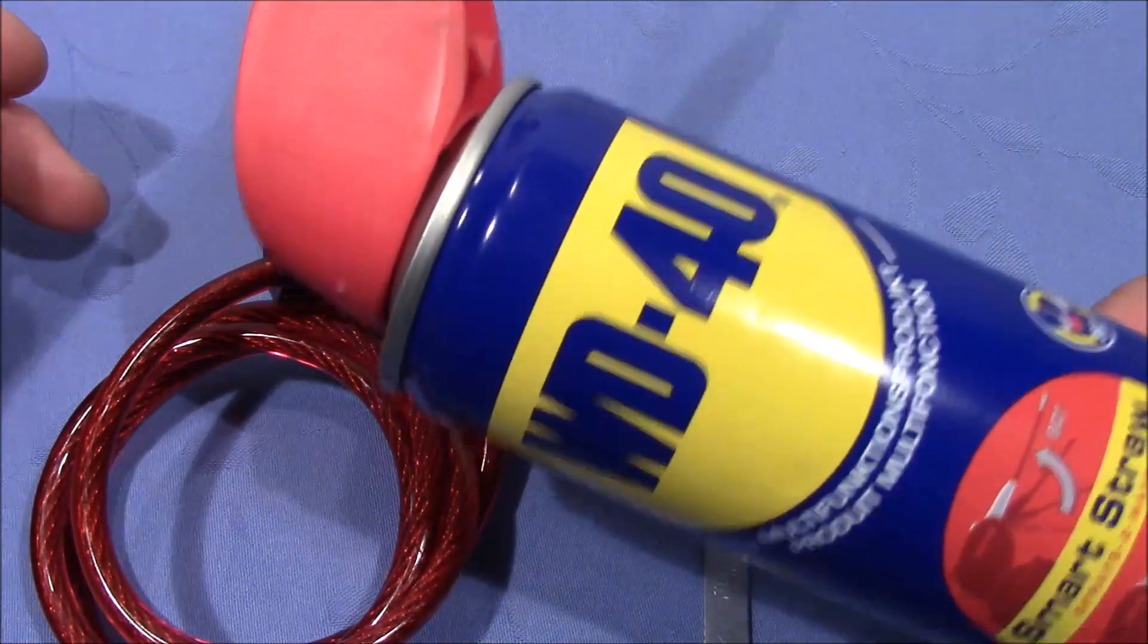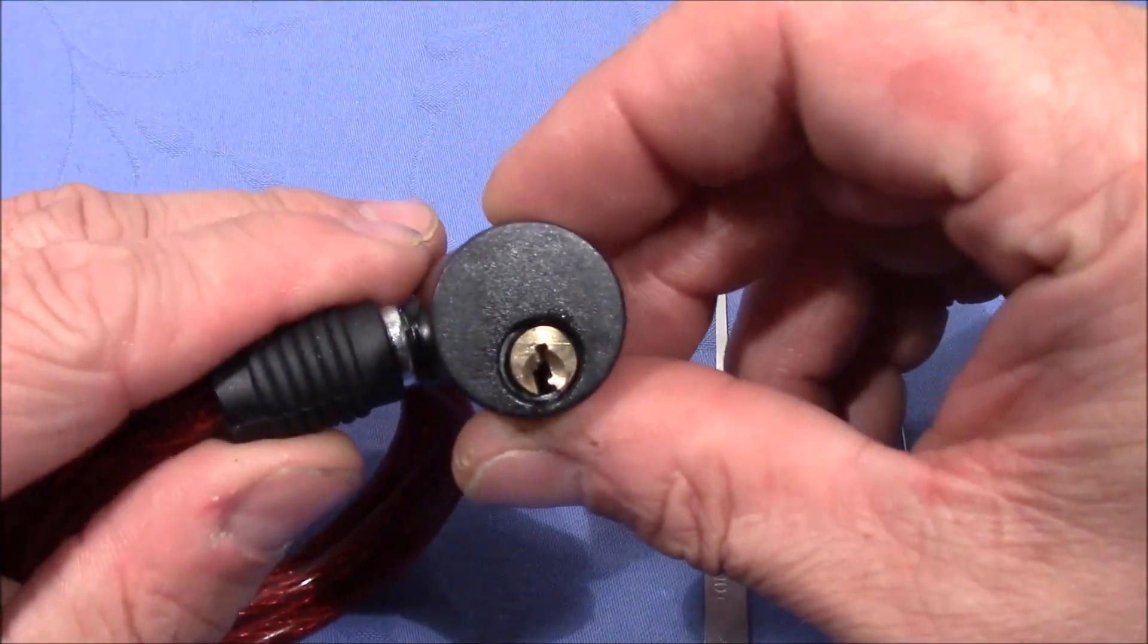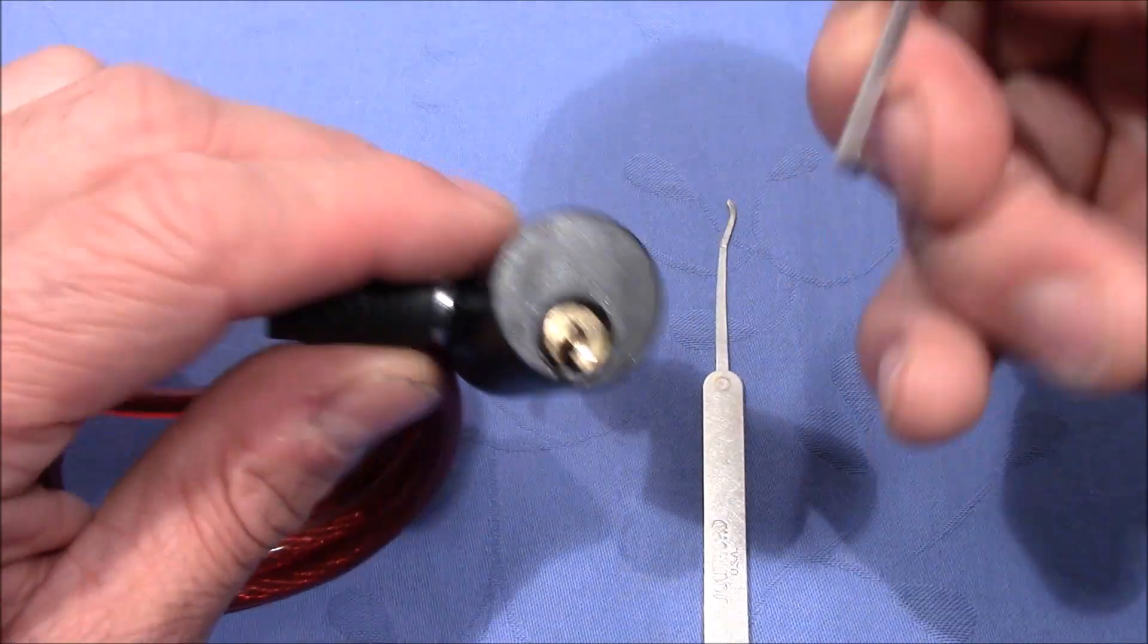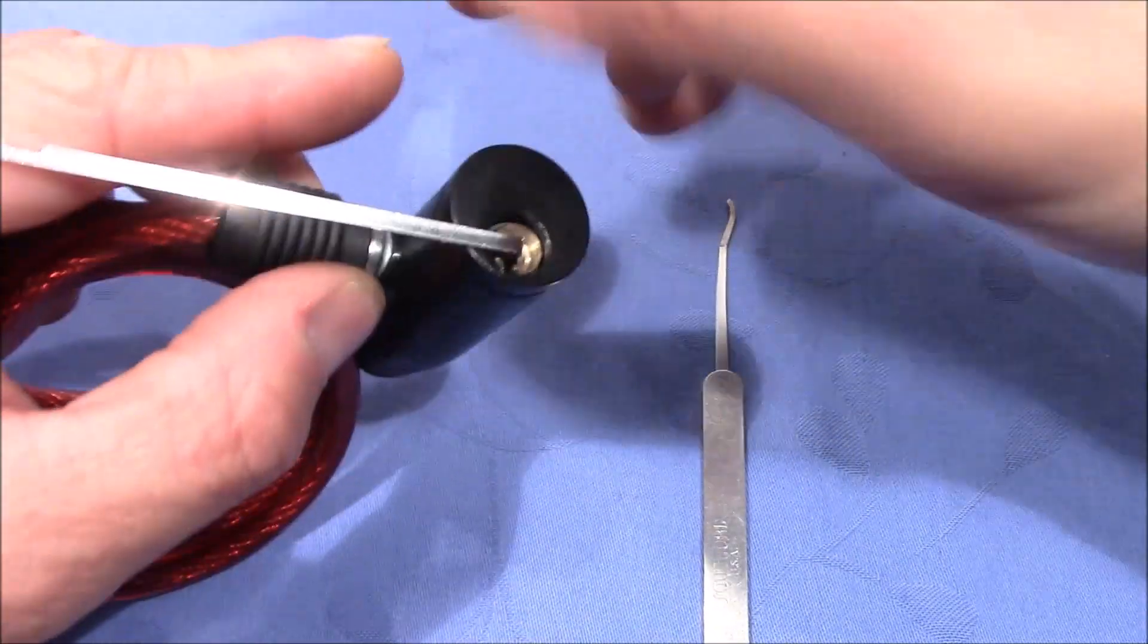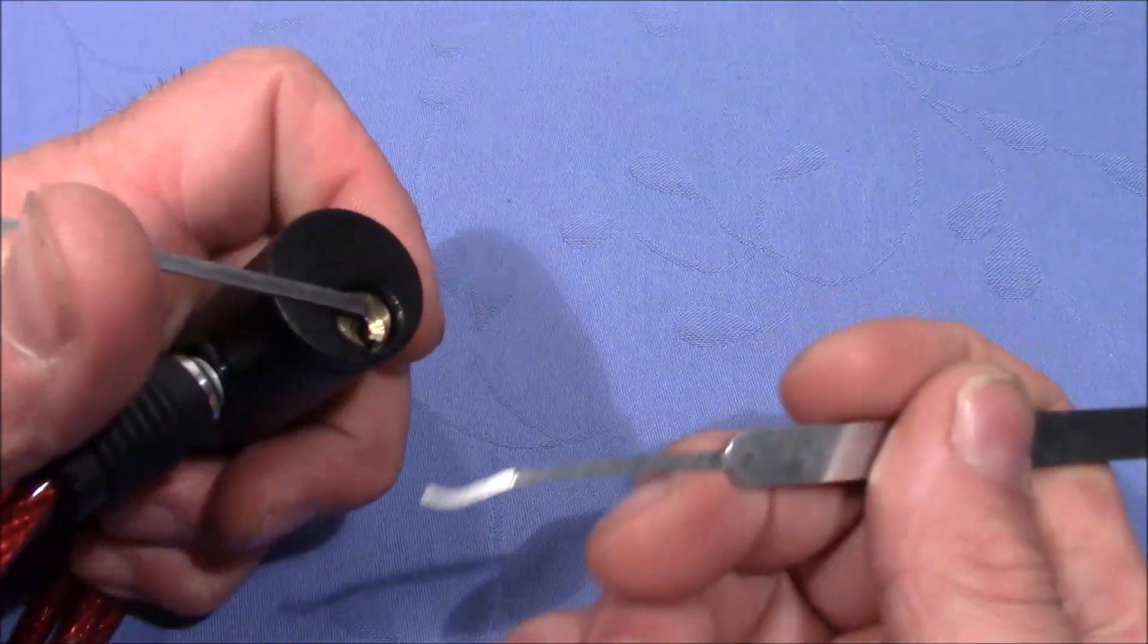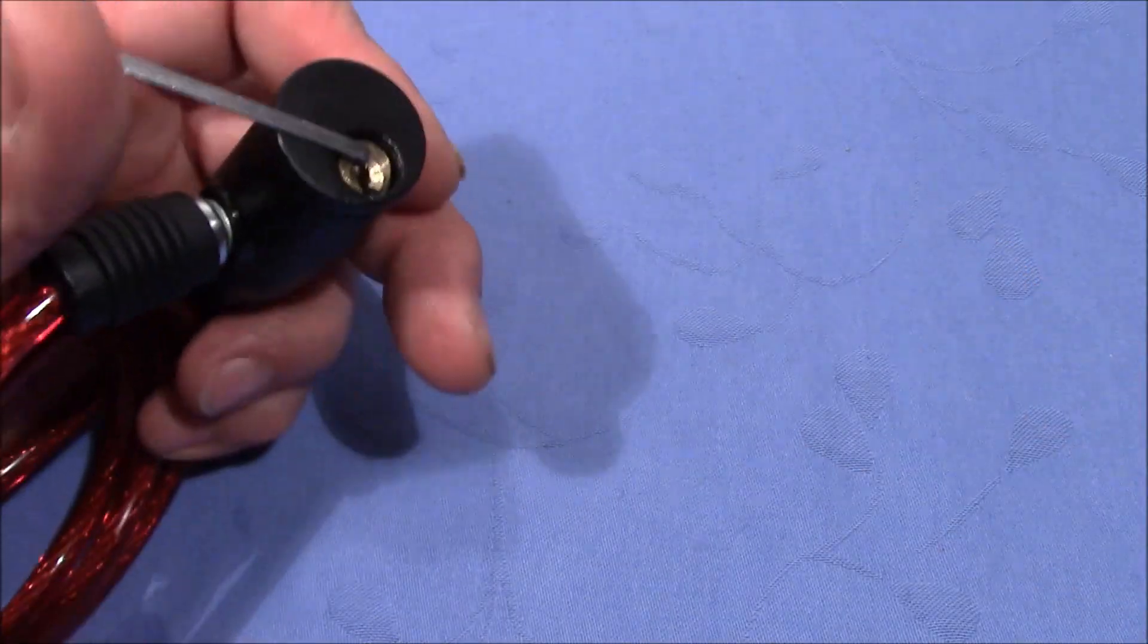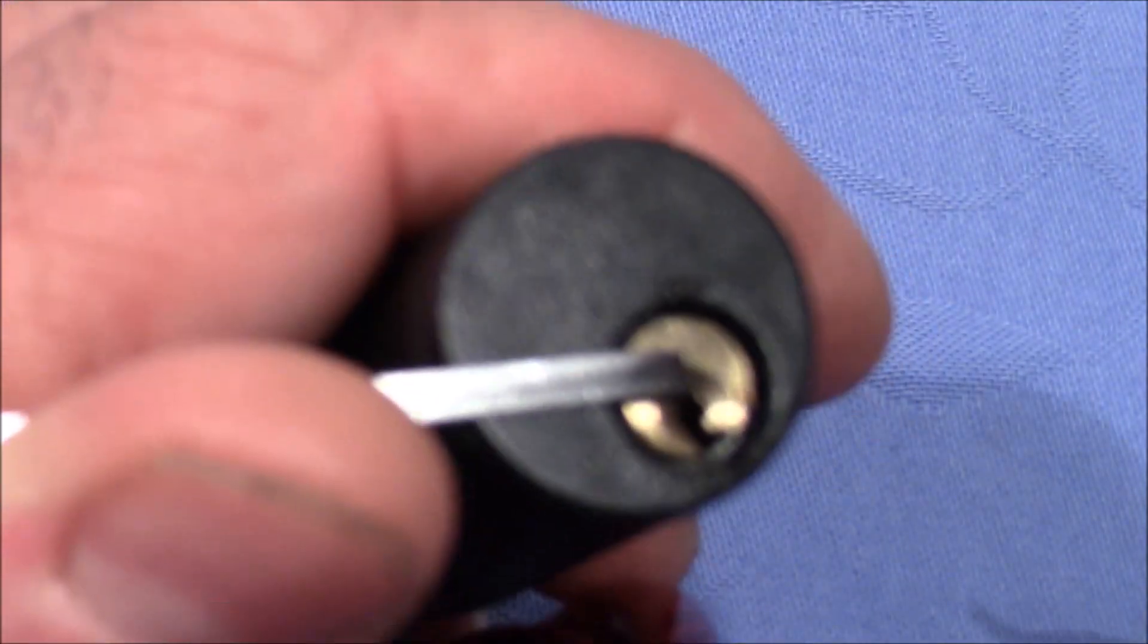Then I sprayed WD-40 in the lock and now it opens like a charm. So that's what I want to show you. I used this L-Tensioner to tension the plug on the top, on the pin side. And I used this almost broken pick and it has enough life in it, enough strength in it to pick this lock open. So let's give it a try.